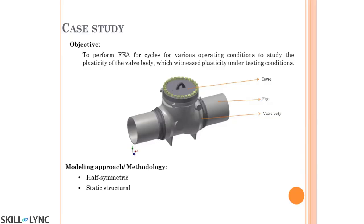When we test under lab conditions, we apply more load than what is seen in operating conditions. For example, if a part experiences 100 Newtons in the field, the company will test it for 150 Newtons. If it doesn't fail at 150 Newtons, that is where your factor of safety comes in — it means it will not fail at 100 Newtons either. This is called shell testing, and in this case, the top part was seen to experience plasticity.